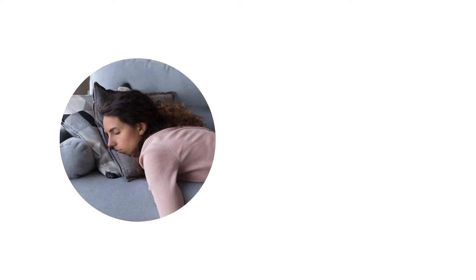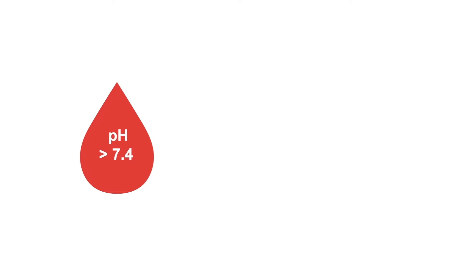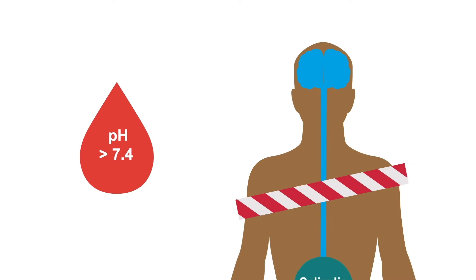However, when the patient is tired and can no longer hyperventilate, their pH will decline. The pH in these patients must stay above 7.4 to prevent uncharged salicylic acid from entering the central nervous system.